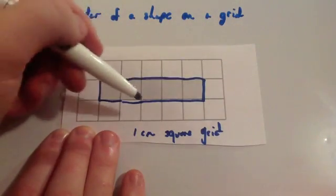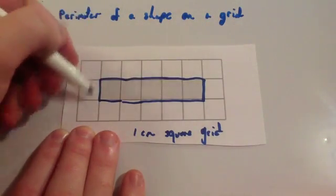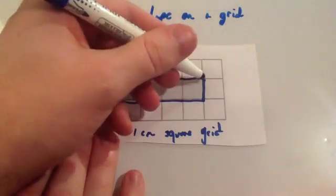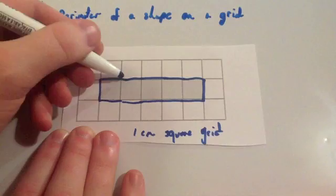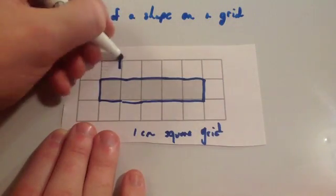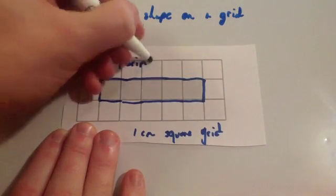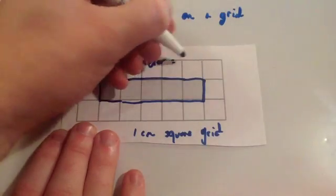So what we're doing is just literally counting each one of the lines. So that's 1, 2, 3, 4, 5, 6, 7, 8, 9, 10, 11, 12. So the perimeter is 12cm.